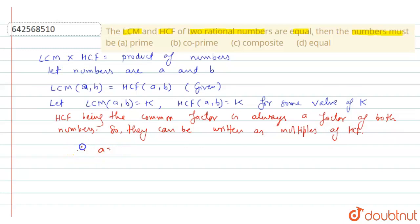We can write A is equal to Kx for some natural number x, and B is equal to Ky for some natural number y.